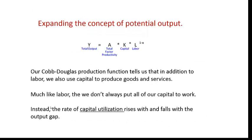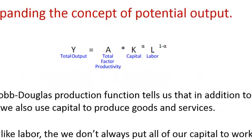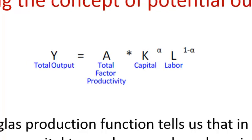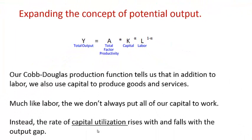Now we're going to expand the concept of potential output. From the Cobb-Douglas production function, there is more than one factor of production — in addition to labor, we also use capital to produce goods and services. Much like labor, we don't always put all of our capital to work. Instead, the rate of capital utilization rises and falls with the output gap.